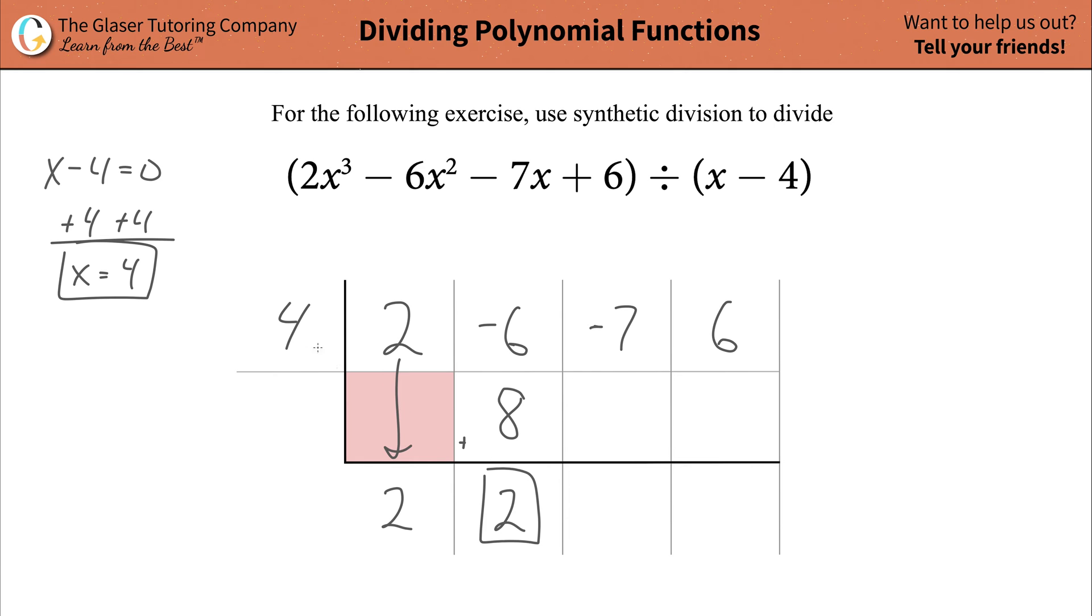Repeat the process. Take this number, multiply it by that number, that becomes an 8, plug it into this cell, and add them together. That becomes a positive 1. Repeat the process. Take this number, multiply it by that number, that's a 4, plug it into this new cell, and add them together. That becomes a 10. Cool.